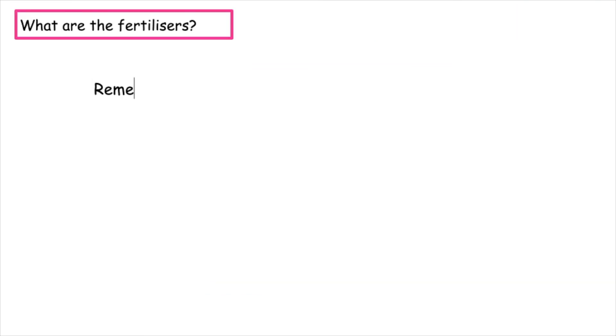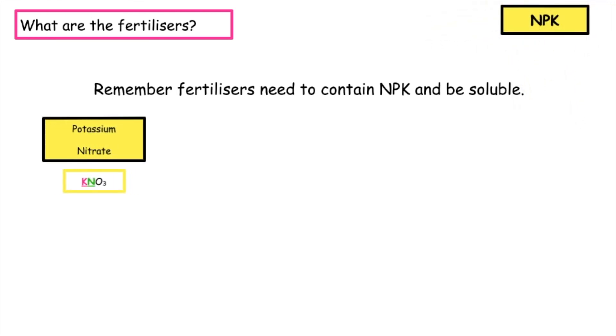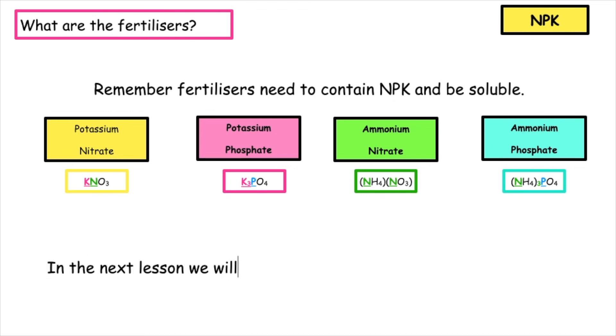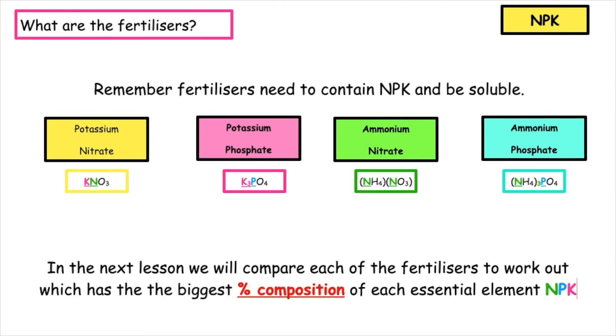Remember when you're creating fertilizers they need to contain the elements N, P or K and also be soluble. The four fertilizers that we've created today all contain at least one of the elements N, P or K and are all soluble. You can check this up using page eight of your chemistry data booklet. In the next lesson we're going to compare each of these fertilizers to work out which has the biggest percentage composition of each essential element in the salt.